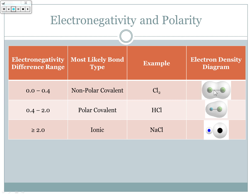For example, Cl₂ — two chlorine atoms bonding together. They share the electrons equally with an equal electron cloud because they have the same electronegativity, being the same element, so neither one attracts the electrons more or less — that's a nonpolar covalent bond. HCl is a polar covalent bond, where hydrogen had a slightly smaller electronegativity than chlorine, so chlorine attracts more of the electrons. And if the electronegativity difference is greater than or equal to 2.0, it becomes an ionic bond where one donates and one accepts electrons.